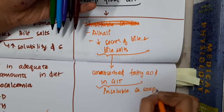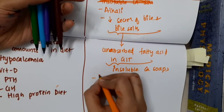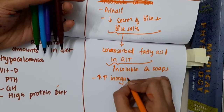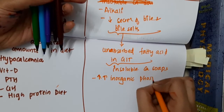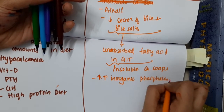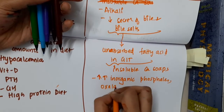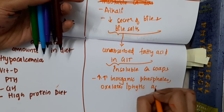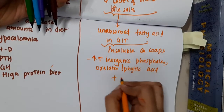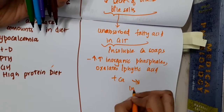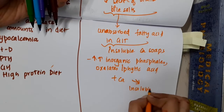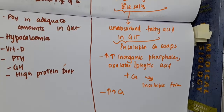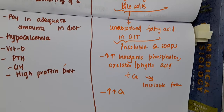Fourth, excess inorganic phosphates, or oxalates, or phytic acid — these combine with calcium and form insoluble compounds, reducing absorption. Fifth, increased calcium in the diet will also decrease calcium absorption from the GIT.